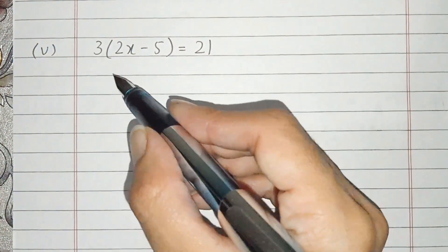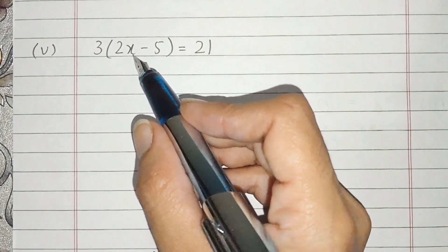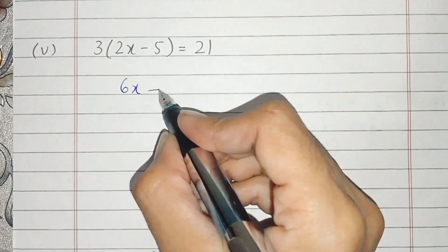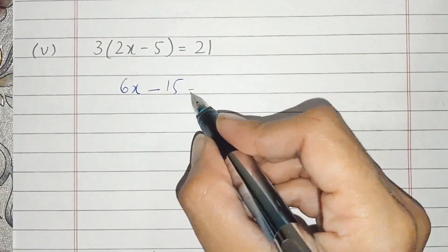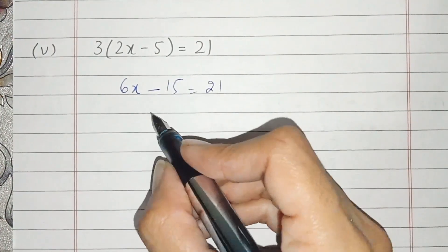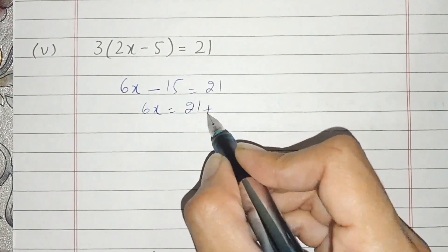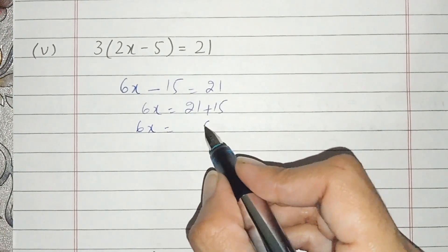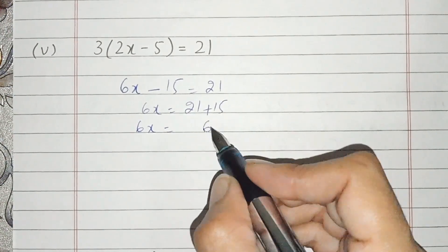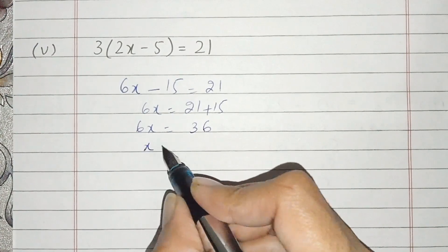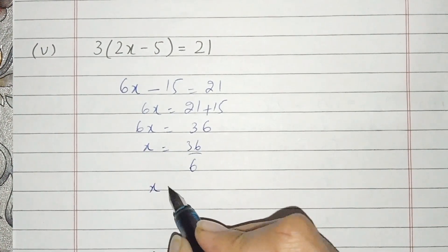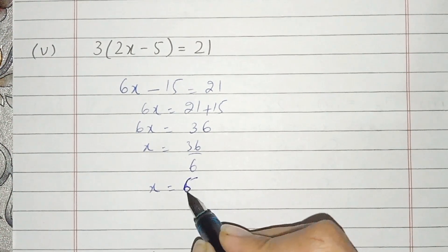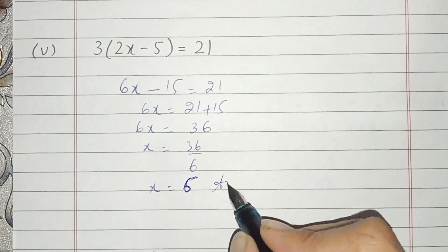Now, students, 5th part. There is a bracket — first we will solve the bracket by multiplying. We get 6x. It multiplies by 3 to give 15 and 21. Position changed to plus 15. In 21 we add 6 and 2 and 3 to get 36. We divide and x is 6. This is the answer.